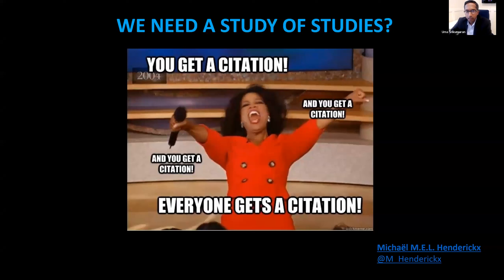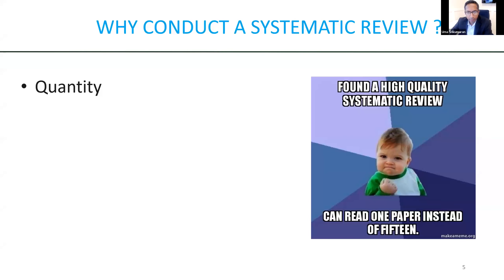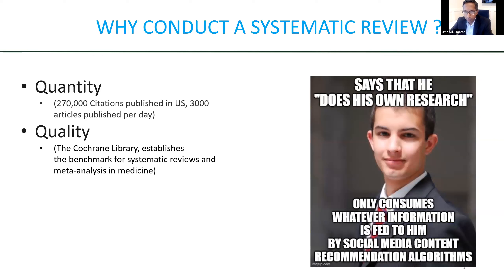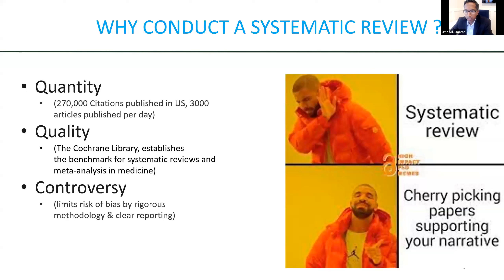So why do we need a study of other studies? There are three main categories. The first is simply quantity — the amount of literature is tremendous and the pace of publication is very rapid and increasingly so. The second issue is quality, which can vary amongst all these different studies, and there's likely substantial bias in which studies we're exposed to. And finally, there's controversy. Even when the quality is high, there can be significant controversy as different studies may have completely opposite conclusions, and we're all likely to cherry-pick and find evidence that supports our pre-existing notions or ideas.